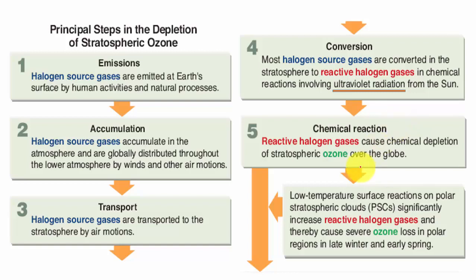This is a very important concept under critical geographical features in the GS geography section, relevant for both prelims and mains exams. One important related concept is the Montreal Protocol — an international convention under the Vienna Convention — aimed at reducing and completely eliminating the production and sale of CFCs as refrigerants, so that ozone depletion is halted. As a result of initiatives like the Montreal Protocol, the ozone layer is slowly recovering.